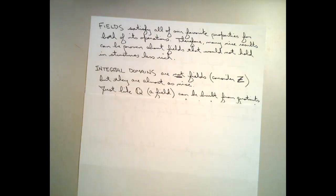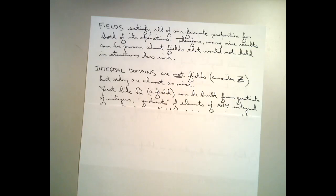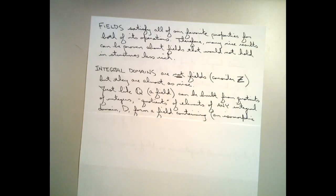Just like we can build the rational numbers from the integers by taking quotients of them — so in essence we're taking an integral domain, the integers, and building a field that contains the integers from quotients of integers — it turns out that we can do this with any integral domain. I'm not going to prove it, but I just wanted to mention this: if we have any integral domain, we can build a field that contains that integral domain from quotients of the elements. And when I say the new field contains the integral domain, it contains an isomorphic copy of the integral domain, which for all intents and purposes — for an algebraist anyway — that's the same thing. So integral domains are very close to having properties as nice as fields.